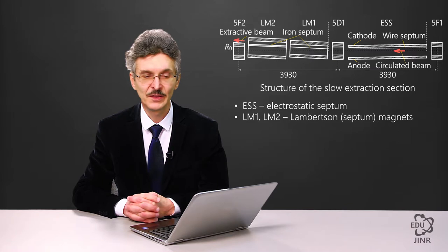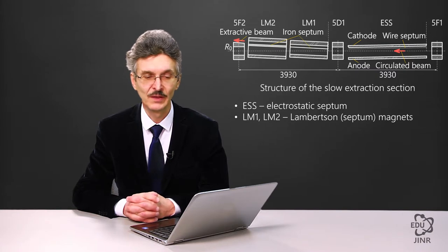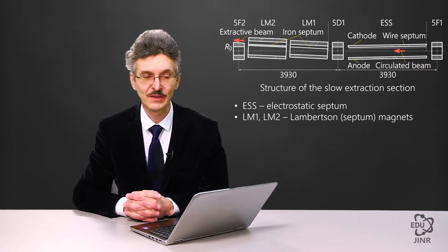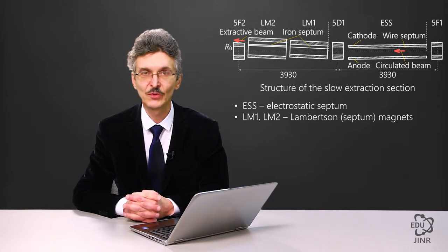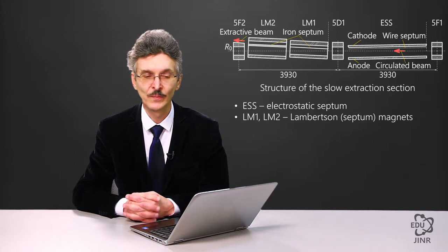The so-called knife of an electrostatic septum is a wire net. The electric field is localized at some distance from the orbit. In fact, the name of a septum magnet comes from the word septum, which means an abrupt border or a knife. A septum magnet is a magnet that provides a sharp decline of the field on its edge.